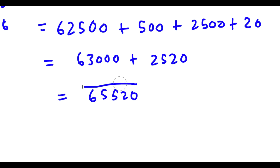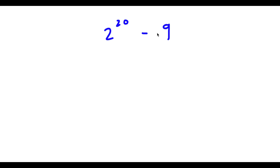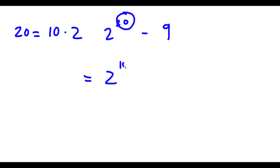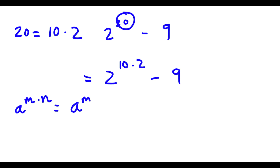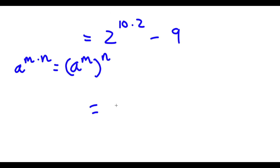So 65,520 is my answer. Now I have 2 to the power of 20 minus 9. Now 2 to the power of 20 — 20 is the same as 10 times 2 — so I can rewrite this as 2 to the power of 10 times 2, minus 9. If I have something in the form a to the power of m times n, this equals a to the power of m to the power of n, so 2 to the power of 10 times 2 becomes 2 to the power of 10 to the power of 2.